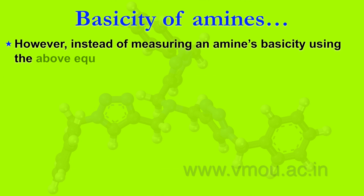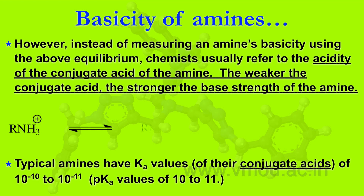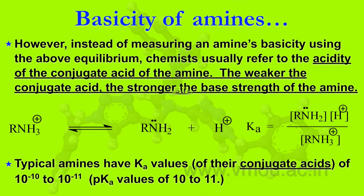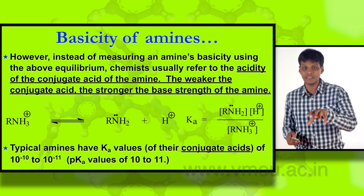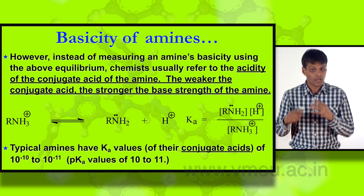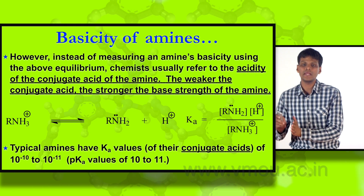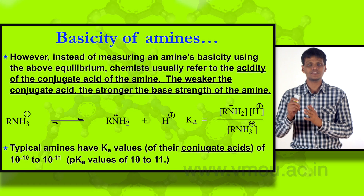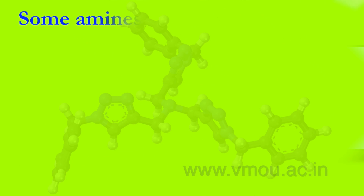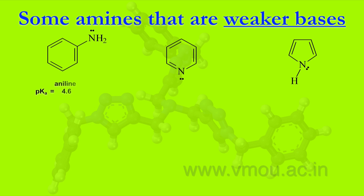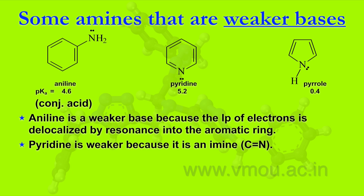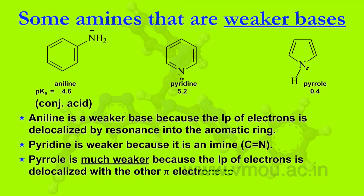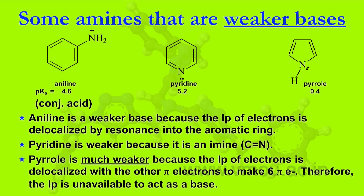Instead of measuring amine basicity from equilibrium directly, we find the acidity of the conjugate acid of the amine: the weaker the conjugate acid, the stronger the amine base. Typical amines have a Ka value of 10^-10 to 10^-11. Some amines are weaker bases, like aniline, pyridine, and pyrrole, because the lone pair of electrons is delocalized by resonance in the aromatic ring. Pyridine is a weaker base than aliphatic amines, and pyrrole is much weaker because its lone pair is fully delocalized.